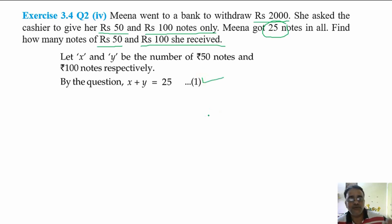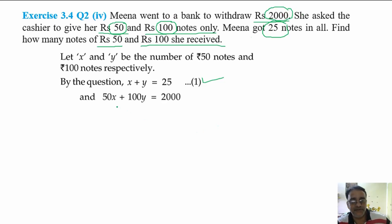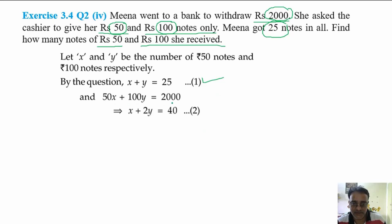And the total amount is 2000. The amount equation gives us: 50 into x plus 100 into y is equal to 2000. Dividing everything by 50, you get x plus 2y is equal to 40. That will be equation number 2.